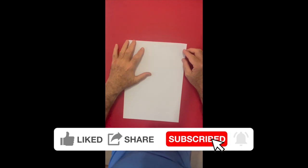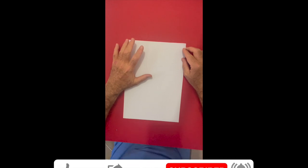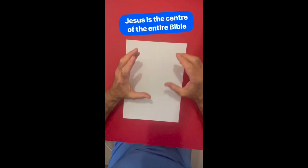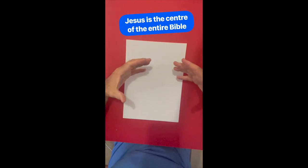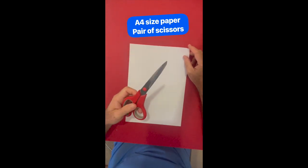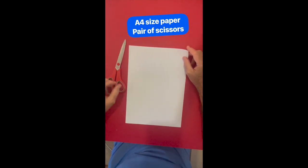I want to share with you an object lesson. It's a paper tear that's so powerful and can be an amazing tool to use when sharing the gospel and also sharing about the fact that Jesus is the center of the entire Bible. All you need is a piece of A4 size paper, you need a pair of scissors and we're ready to begin.